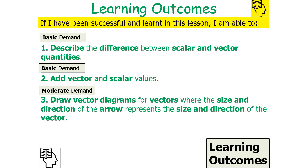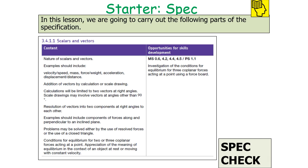If we've been successful in this lesson, we should be able to describe the differences between scalar and vector quantities, add vector and scalar quantities, and draw vector diagrams where the size and direction of the arrow represents the size and direction of the vector. We're going to be looking at AQA A-level physics specification 3.4.1.1: scalars and vectors.